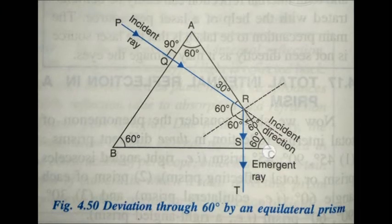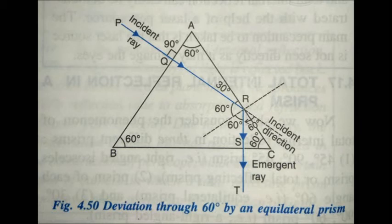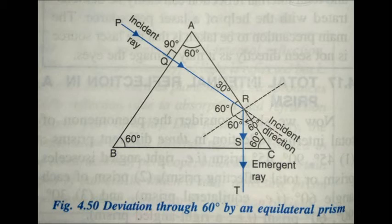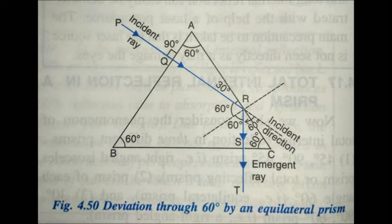Since the dashed line represents the normal to face AC, and angle ARQ is 30 degrees, the angle of incidence on face AC is 60 degrees — greater than the critical angle of 42 degrees for the glass-air pair. So the ray undergoes total internal reflection at point R, with the angle of reflection also equal to 60 degrees. The reflected ray RS then hits face BC at normal incidence (0 degrees) and travels undeviated along ST. This is how total internal reflection takes place in an equilateral prism.